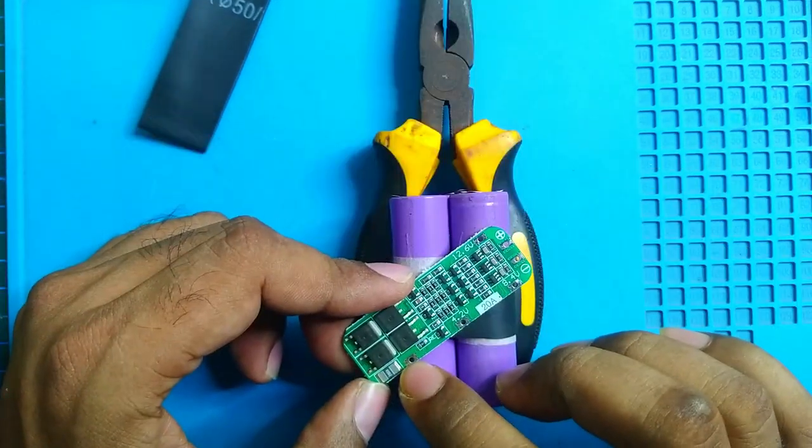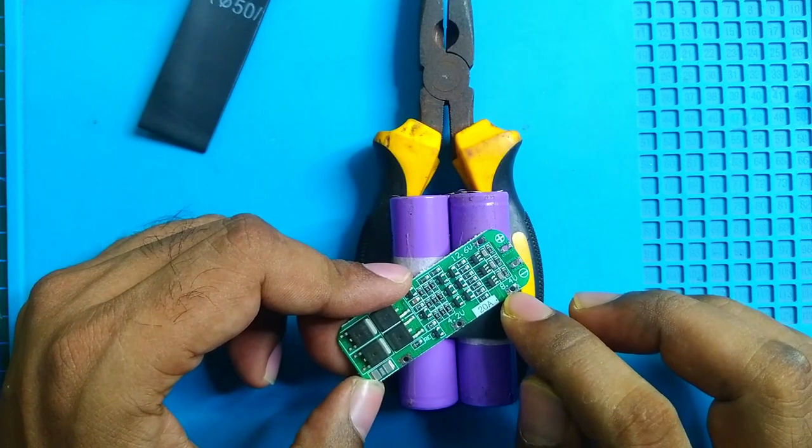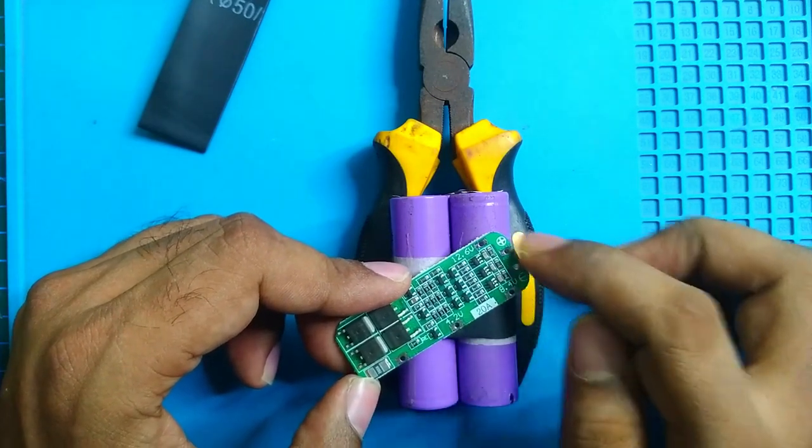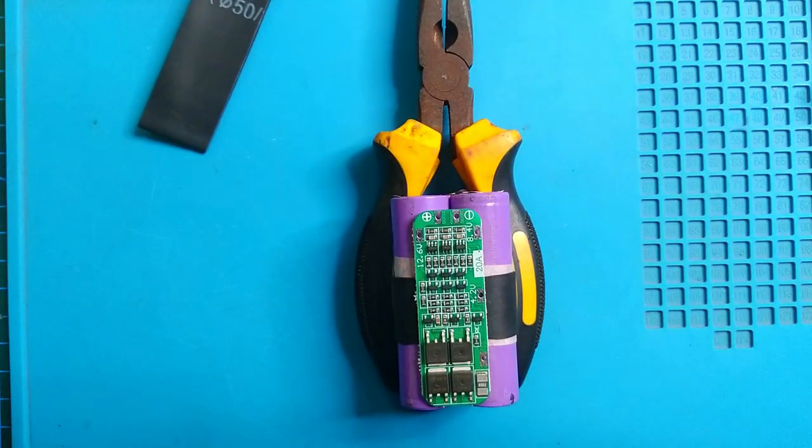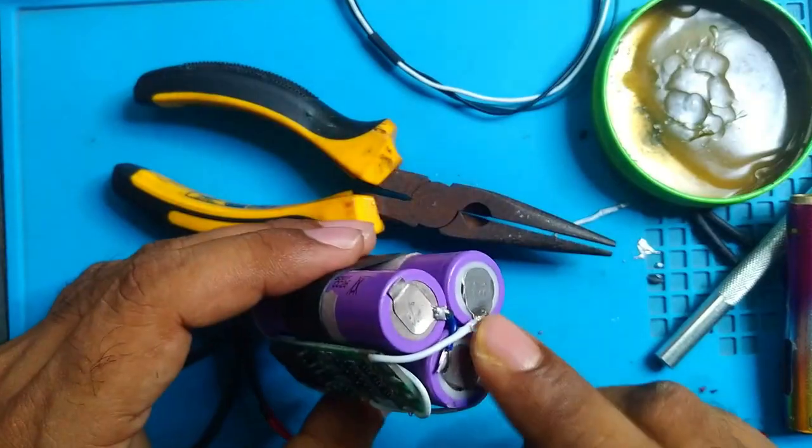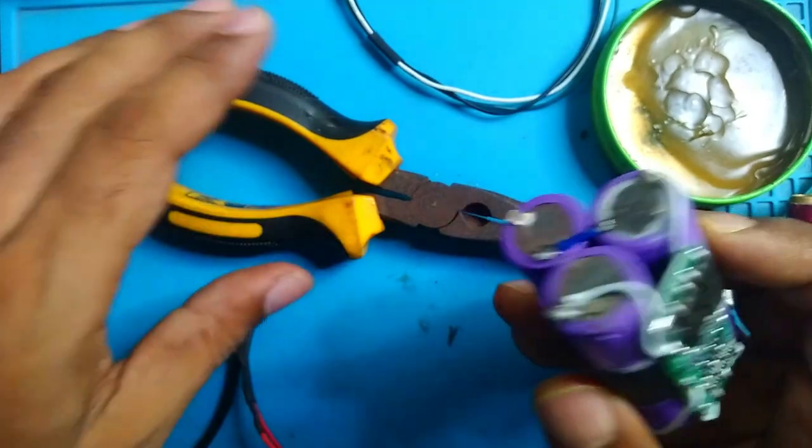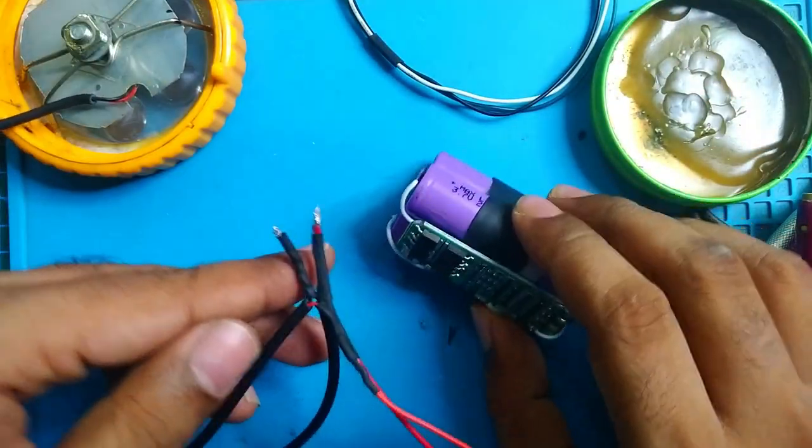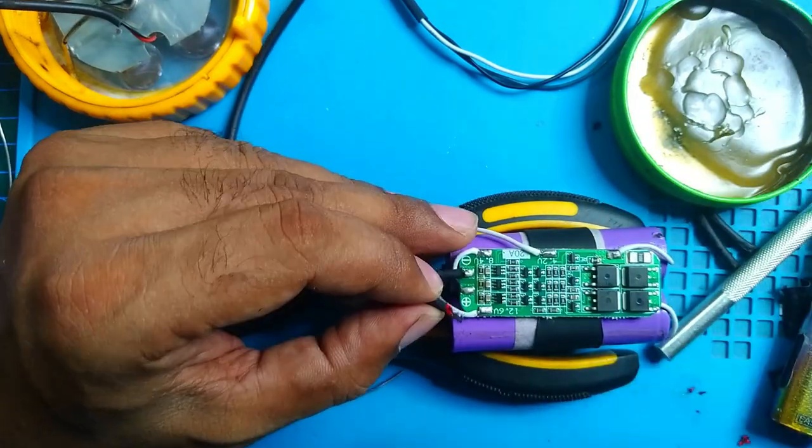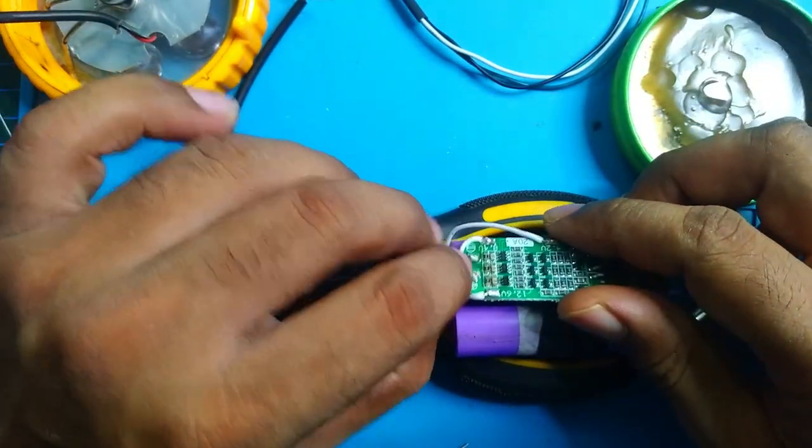This is battery minus. This is first battery positive. This is second battery positive. This is third battery positive. And these two are output terminals. Now soldering time. Our battery is connected to the BMS. And now we will connect our LED to the BMS. Negative connected. Positive is connected too.